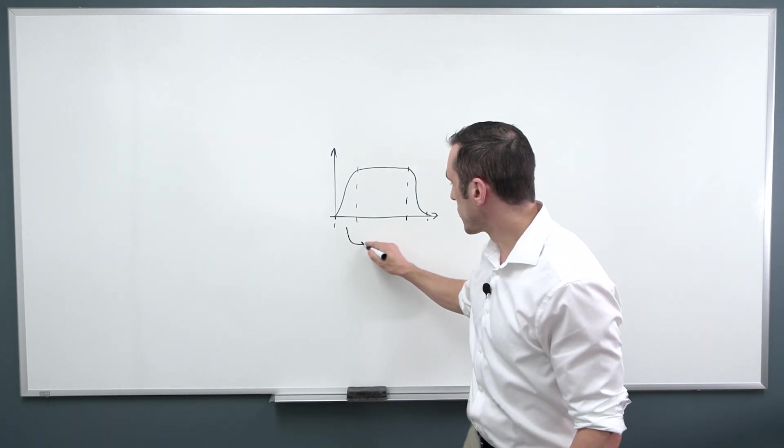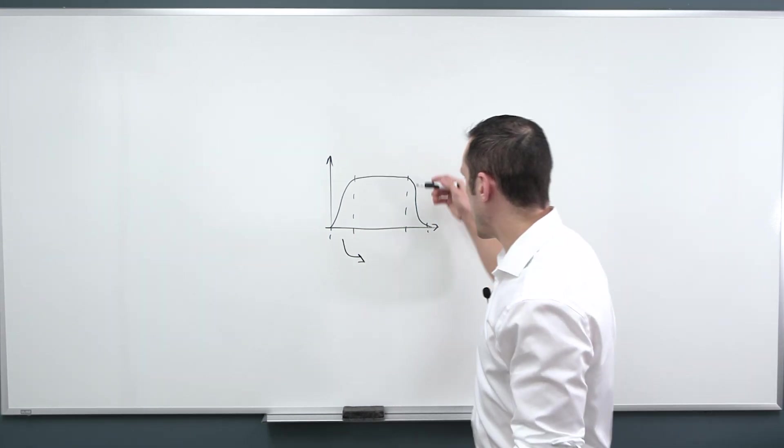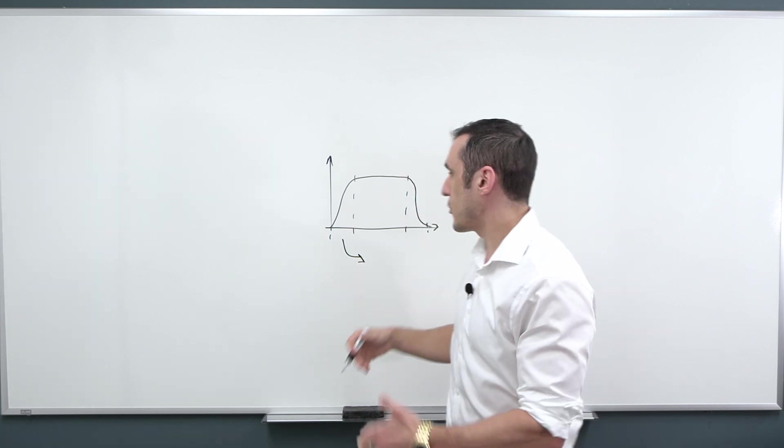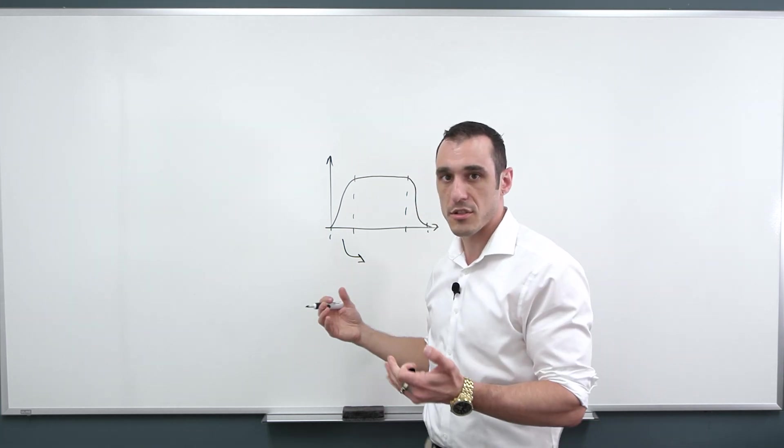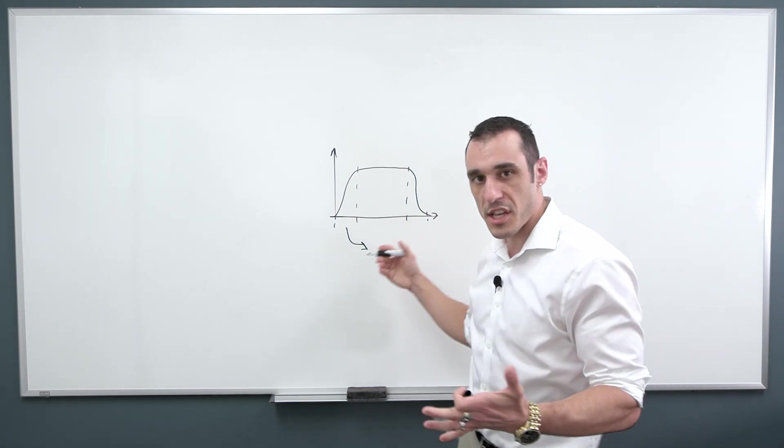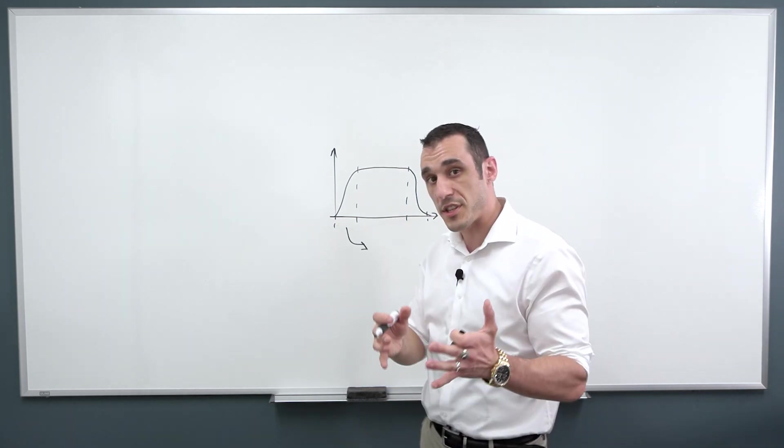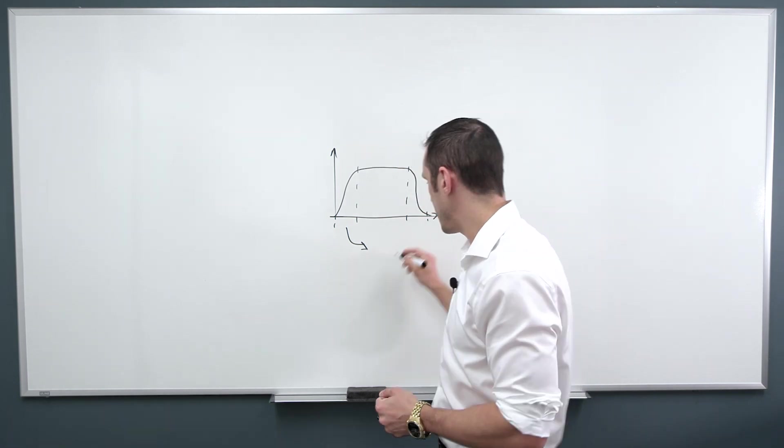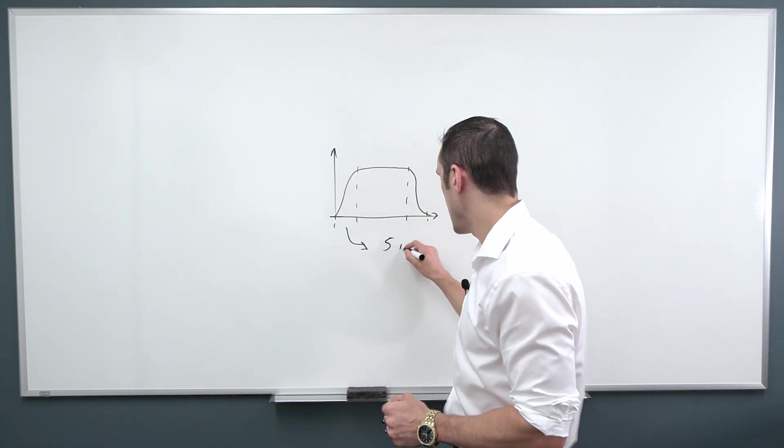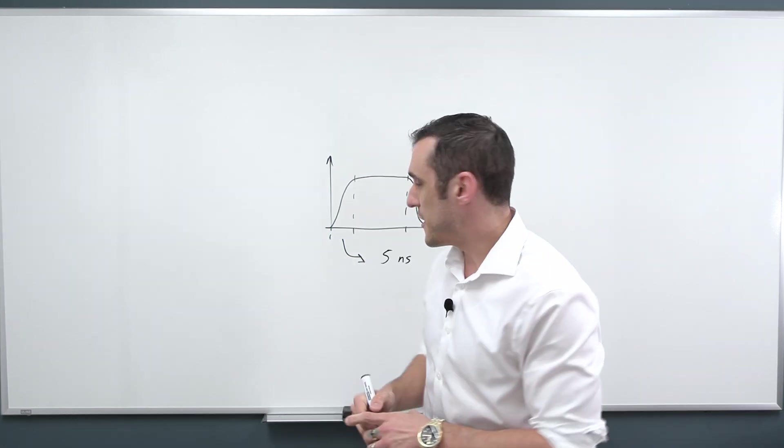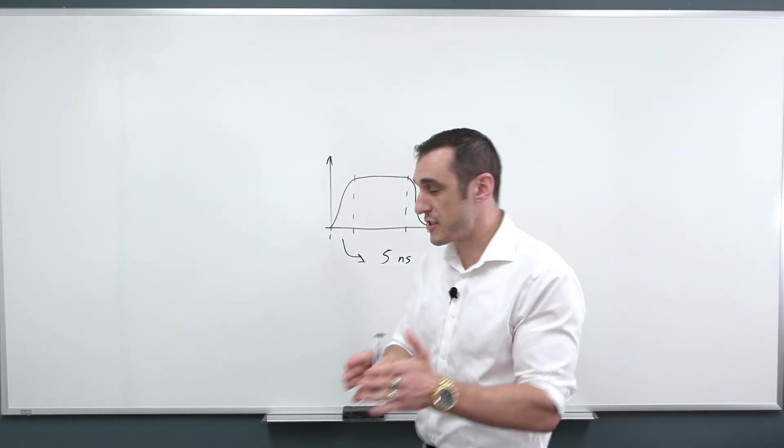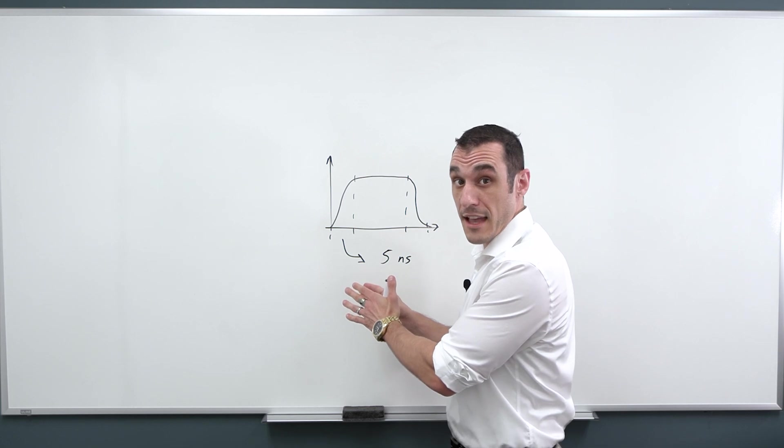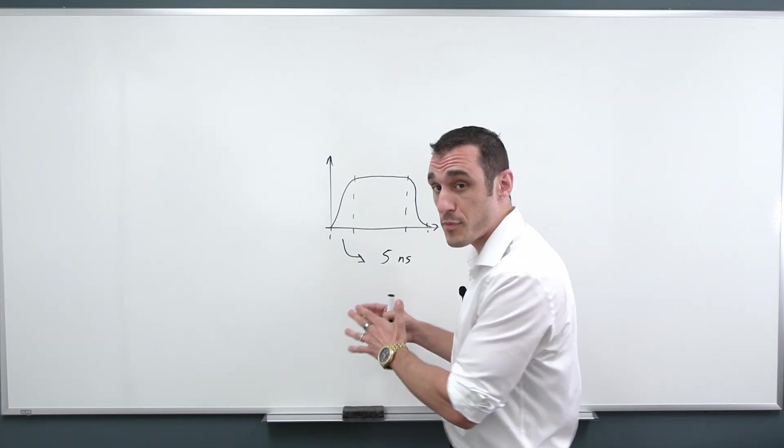Normally we just use the rise time. The fall time tends to be a bit longer because of the way transistors work in integrated circuits. So the rise time here that determines the cutoff between a low-speed signal versus a high-speed signal is usually considered to be in the neighborhood of about five nanoseconds. There is no specific cutoff. So it's not like 4.9 nanoseconds is high-speed and five nanoseconds is low-speed.